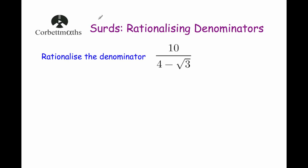Hi, welcome to this Corporate Maths video on rationalizing denominators. In this video we're going to look at how to rationalize denominators for slightly trickier expressions. So rather than rationalizing the denominator for something quite straightforward like 3 over root 2, where you would just multiply both the numerator and the denominator by root 2 to get rid of the surd on the denominator, we're going to look at how to rationalize something like 10 over 4 subtract root 3.